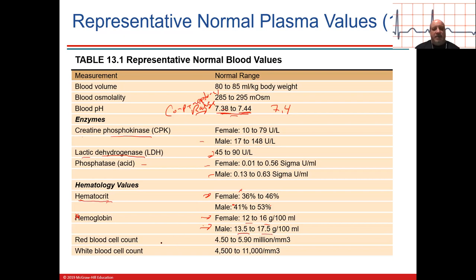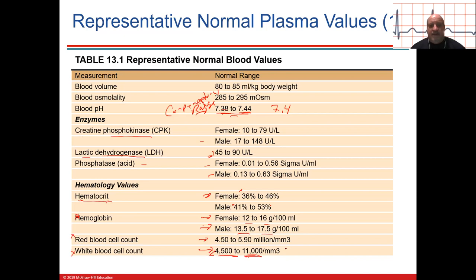Red blood cells number between 4 and 6 million per cubic millimeter. White blood cells have a pretty big range — up to 11,000. They check your red blood cell count for anemia. They check your white blood cell count to see if you're immunosuppressed if it's less than 4,500, or if you're fighting something if it's greater than 11,000.